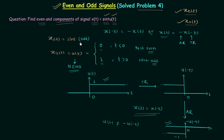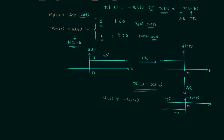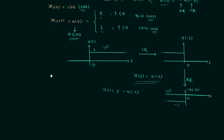We are multiplying an odd signal by a signal that is neither even nor odd, and we don't know any property where odd is multiplied by a neither-even-nor-odd signal. So we cannot use the properties to find the even and odd components. The second way is to use the formulas for even and odd components directly.